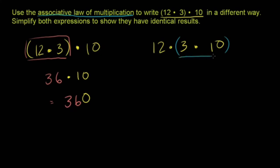So 3 times 10. 3 times 10 is 30. And we still want to multiply the 12 times that. And what's 12 times 30? And we've seen this several times before. You can view it as a 12 times 3, which is 36, but we still have this 0 here. So that is also equal to 360.